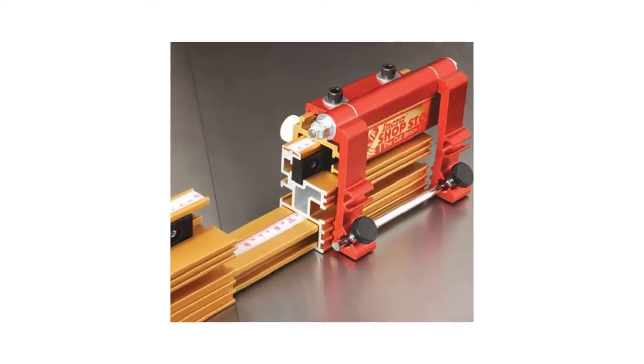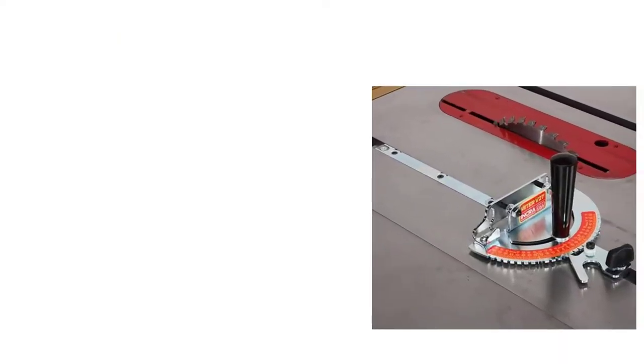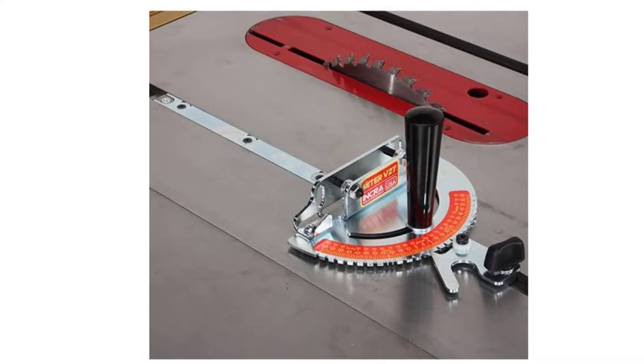There are many fantastic universal miter gauges available for your table saw. The majority of these are able to fit into standard size miter slots, which are 3/4 inches wide and 3/8 inches deep.